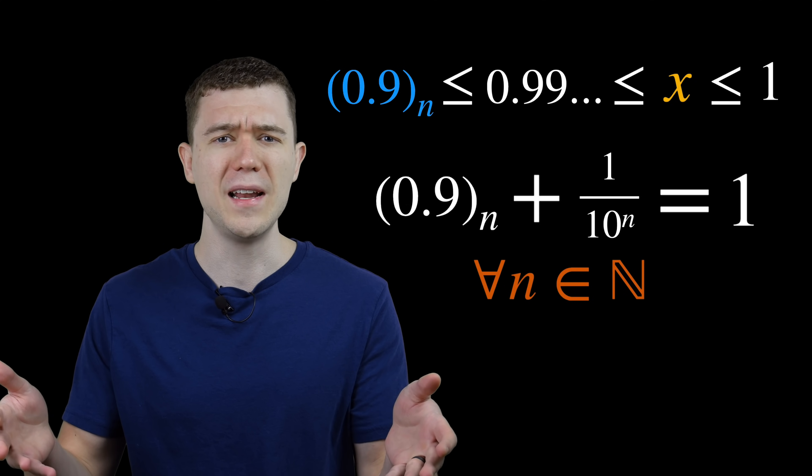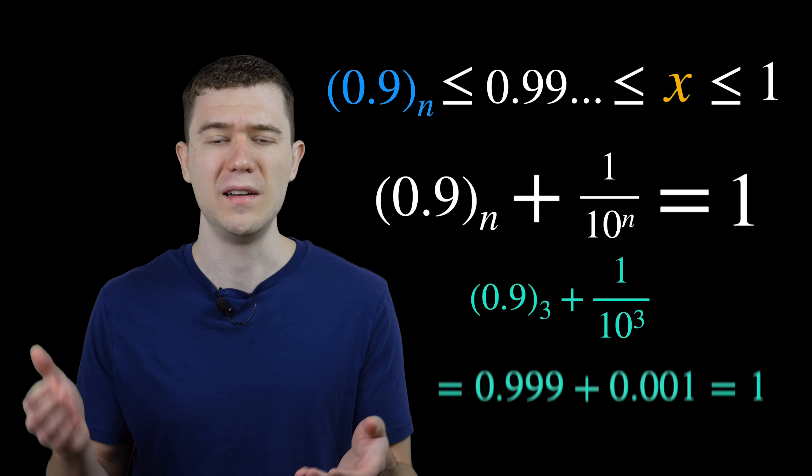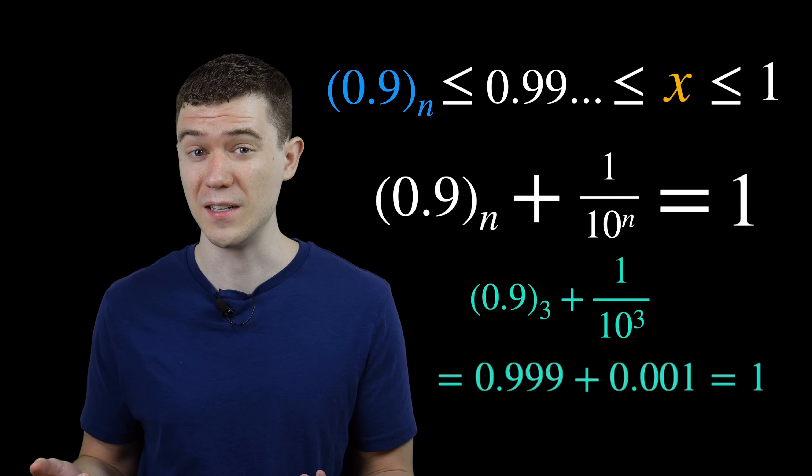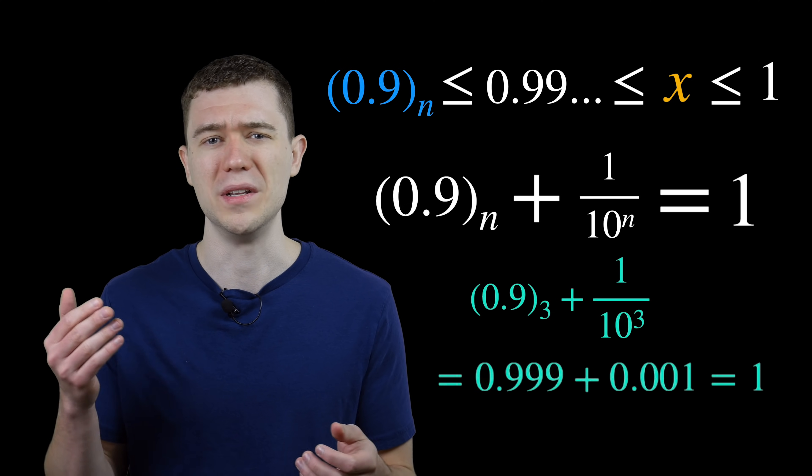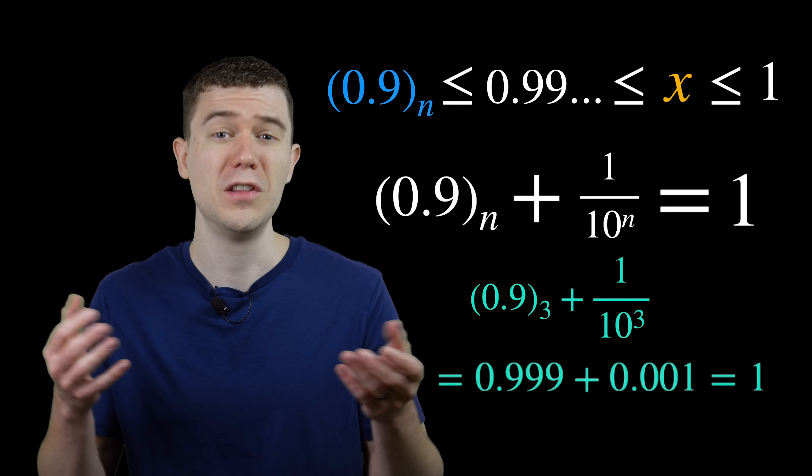For example, let n equal 3. That would be 0.999 plus 1 over 1,000. 1 over 1,000 is 0.001 and those sum to 1.